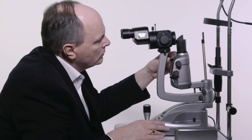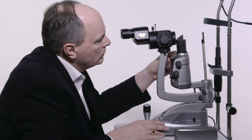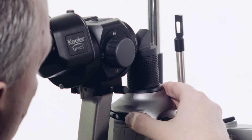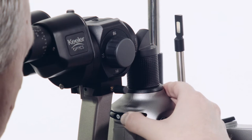The Z-series slit lamp offers a full range of filters required for examination. These filters are blue, clear, red free and neutral density diffuser.